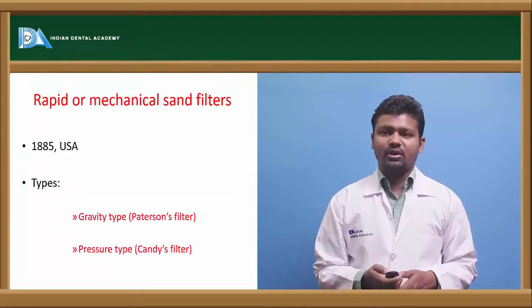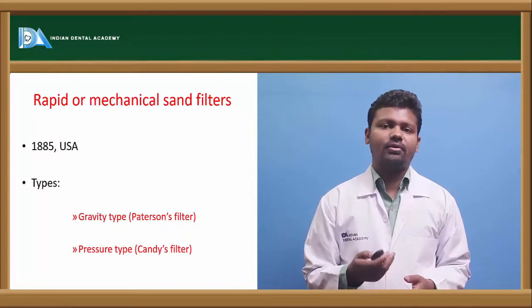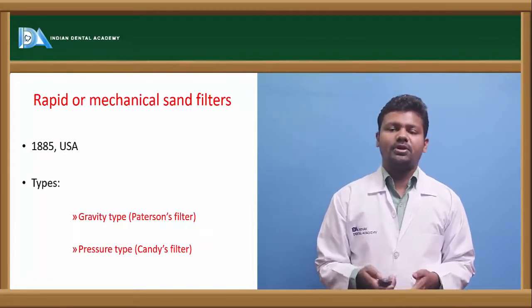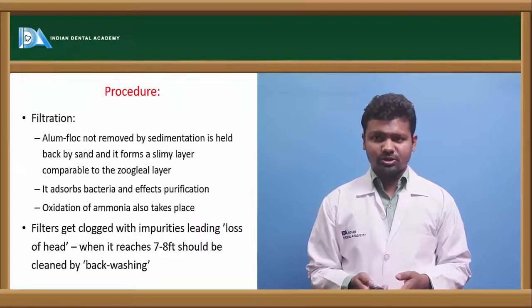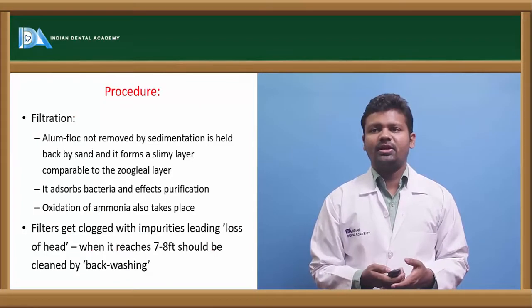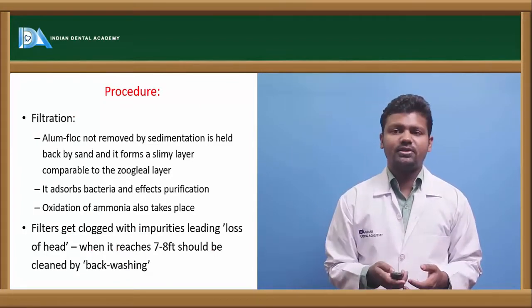Then comes to rapid or mechanical sand filters. It was first developed in USA in year 1885. Gravity type and pressure type are the two types. Procedure - first is filtration. Alum floc not removed by sedimentation is held back by sand and it forms a semi layer. There is oxidation of ammonia.